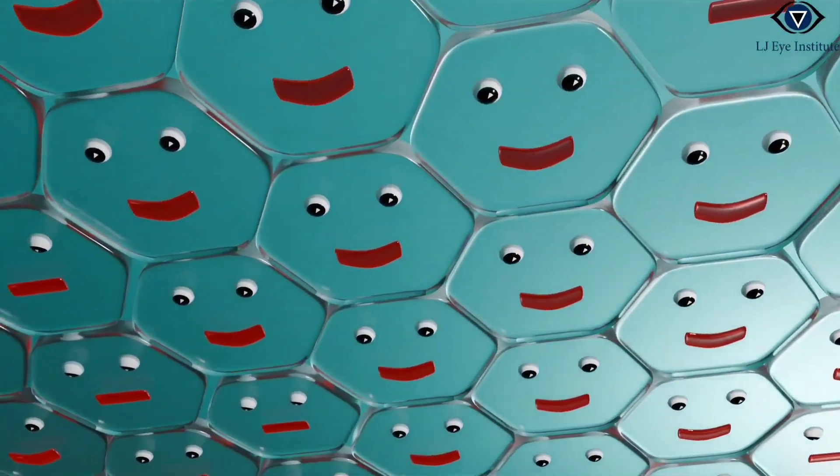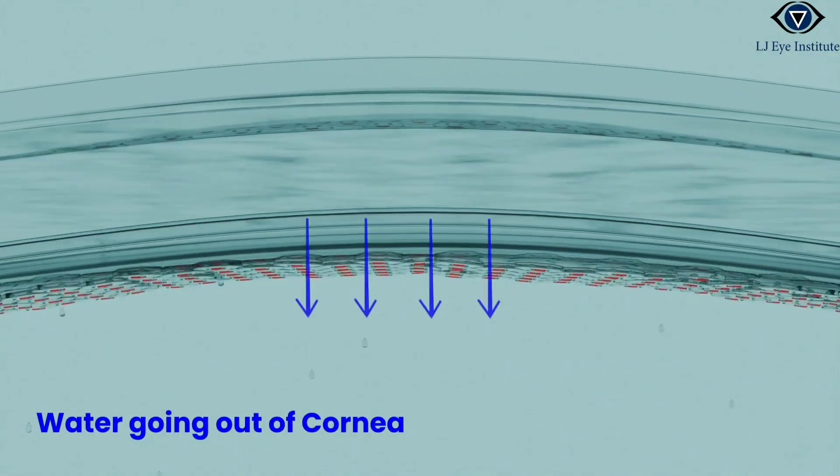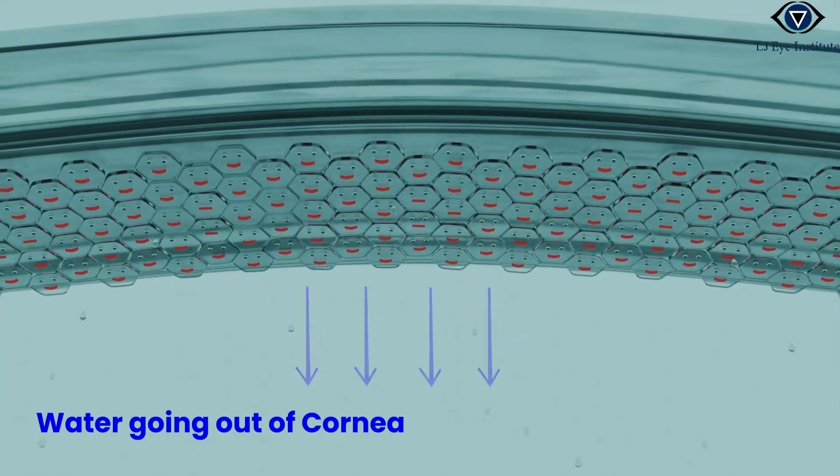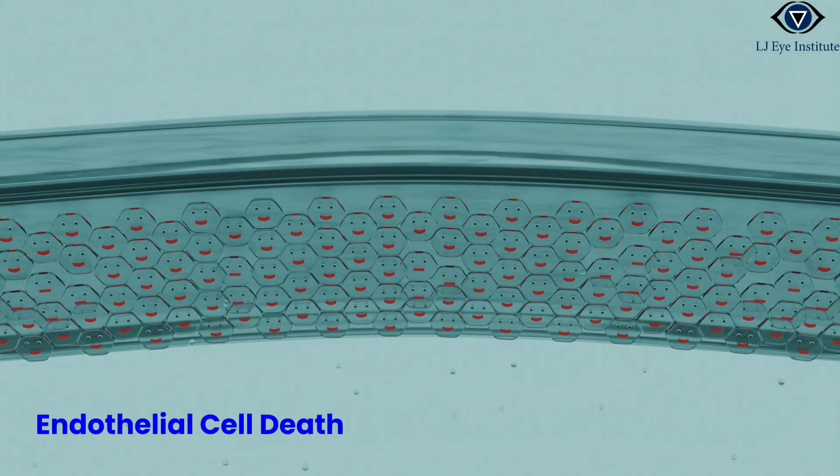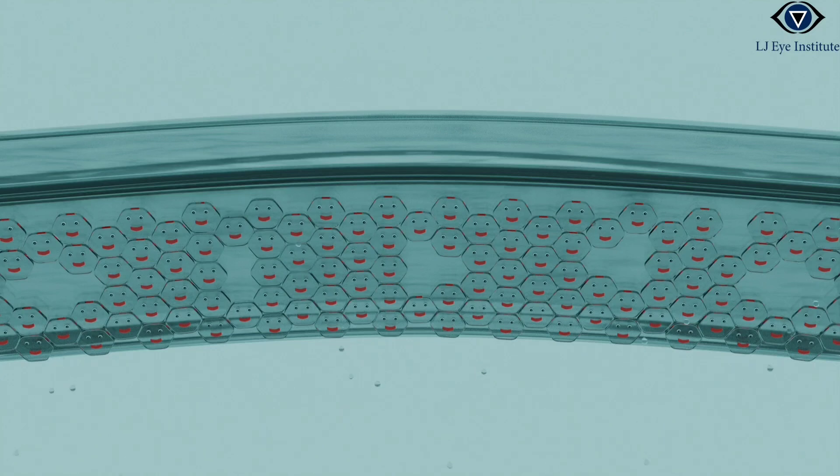The journey of endothelial cells begins at birth, where they are formed with a set number destined to serve throughout one's life. With age, these cells face the inevitable challenges of time and their numbers gradually decrease. As the number of endothelial cells continues to dwindle over time, the ability of these cells to maintain corneal clarity becomes compromised.